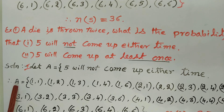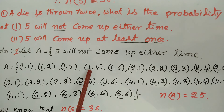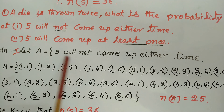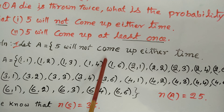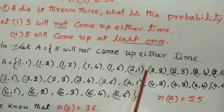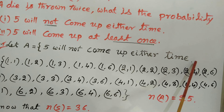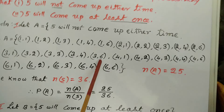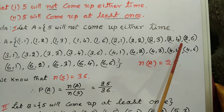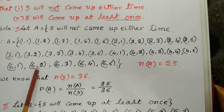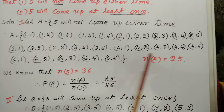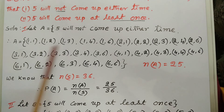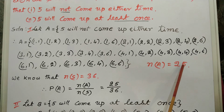Event A can be represented as all outcomes where 5 does not appear in either position: (1,1), (1,2), (1,3), (1,4), (1,6), (2,1), (2,2), (2,3), (2,4), (2,6), (3,1), (3,2), (3,3), (3,4), (3,6), (4,1), (4,2), (4,3), (4,4), (4,6). The five-series is not taken, and in the six-series: (6,1), (6,2), (6,3), (6,4), (6,5) are included. Totally, n(A) = 25 outcomes.